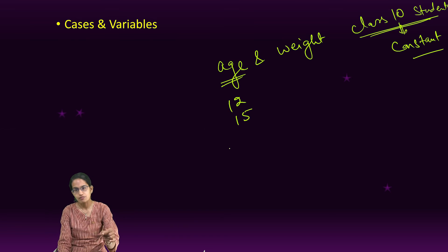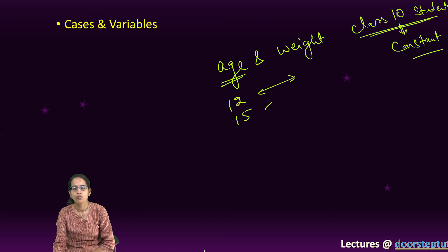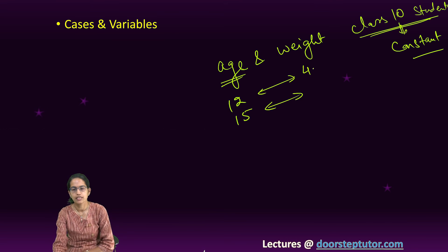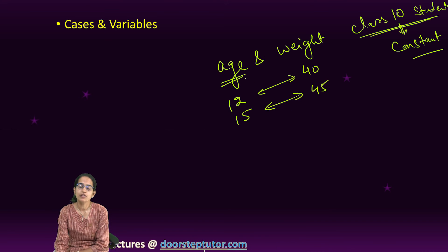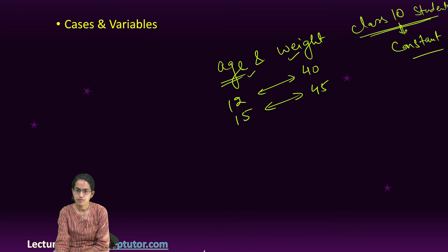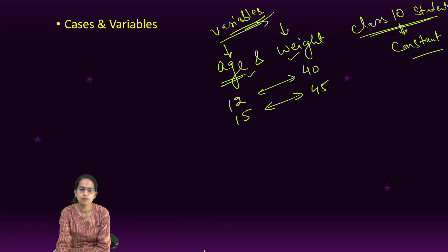Now against the age, I'm trying to find out the weight of the student—let's say 40 kg, 45 kgs, whatsoever it is. So I'm trying to find a relation between age and weight. So both age and weight would be variables.